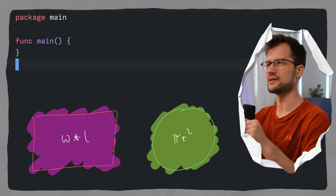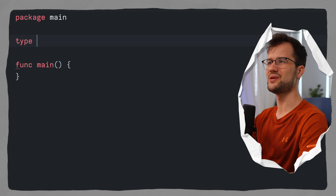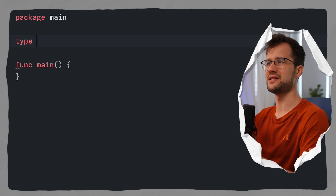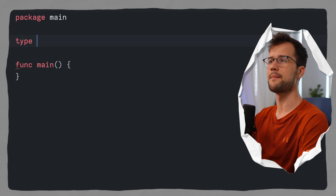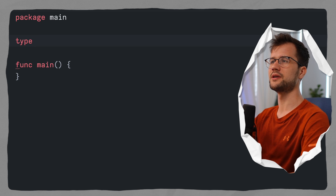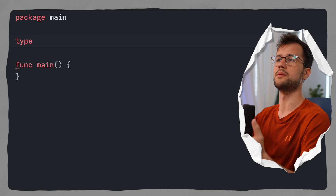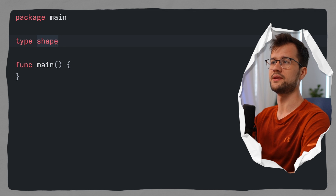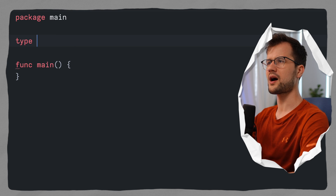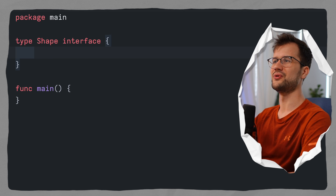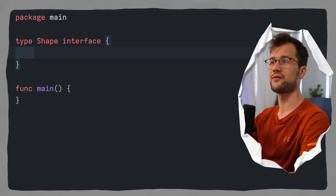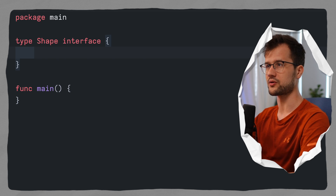Let's define an interface using the type keyword, which in Golang signals a new type definition. Visibility matters here — if we capitalize the interface name it will be public; if we start with a lowercase letter it will be private. I'll make it public and say interface. Now we define the contract of our shape: we'll add the area function definition without any implementation, specifying a float64 return type. That's our first contract method in the shape interface.